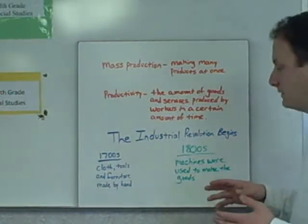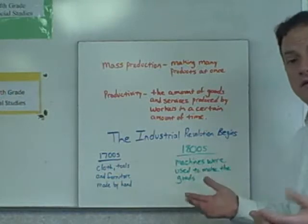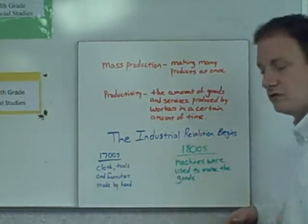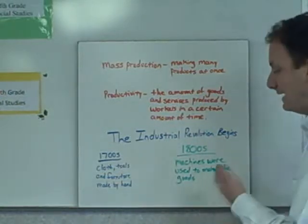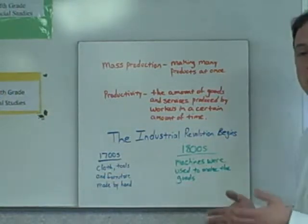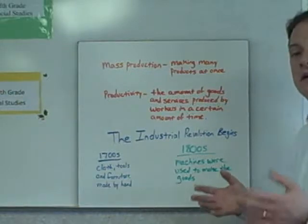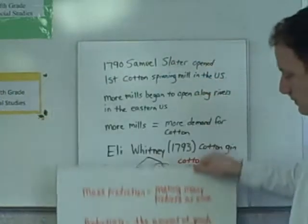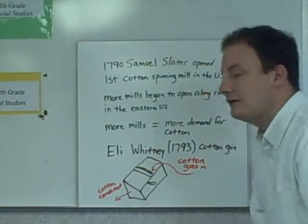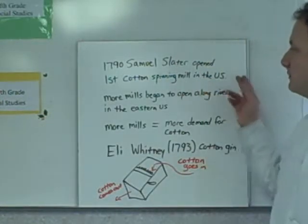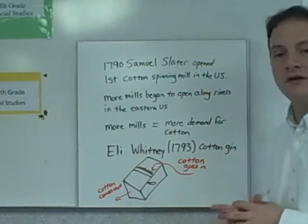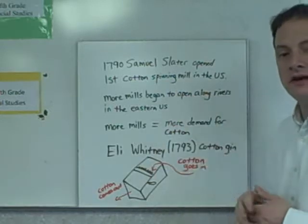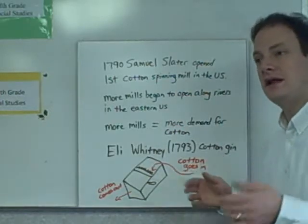So again, in the 1700s whatever you needed — cloth, tools, furniture — you had to make by hand. In the 1800s things began to change and we started making items using machines. In 1790, Samuel Slater opened the first cotton spinning mill in the United States. Cotton spinning and textile mills had been very popular in England.